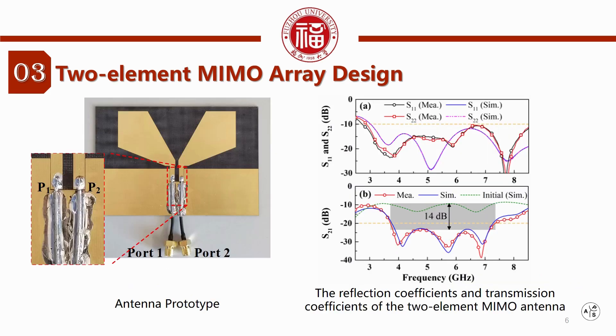The photograph of the prototyped antenna pair, along with the measured reflection and transmission coefficients, are displayed in the figure. As seen, after the decoupling design with the addition of the coupled line, the worst-case coupling level is reduced by at least 14 dB and maintains below minus 20 dB from 3.7 GHz to 7.3 GHz.